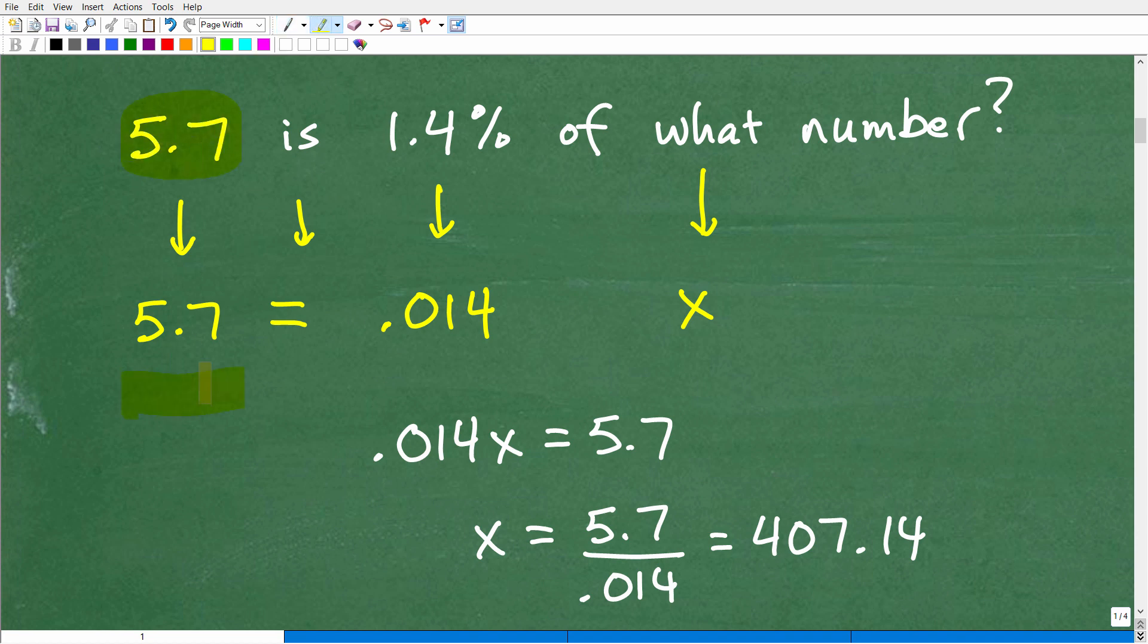So 5.7, that's 5.7 here. Anytime you see the word 'is' in mathematics, 'is' is the same thing as an equal sign. Is equal to. So 5.7 is, or is equal to, so I'm going to put the equal sign right there. 1.4%. I know I'm going to have to change this percent to a decimal, so I'm going to write 1.4 as 0.014. I'm moving that decimal point over two places to the left. Of what number? When we don't know the number in algebra, we just use a variable like x. So this is the setup.